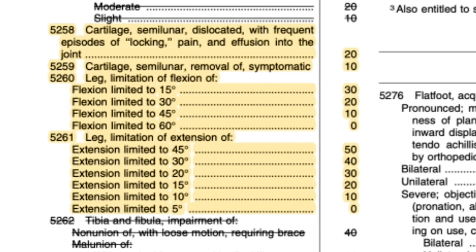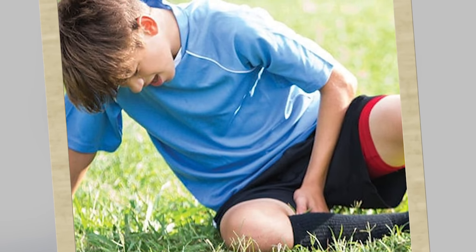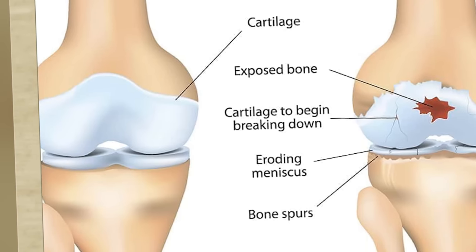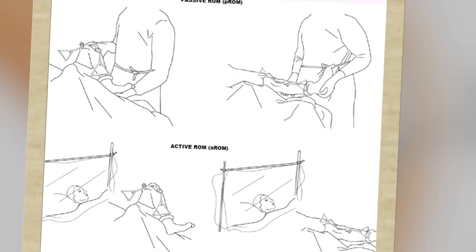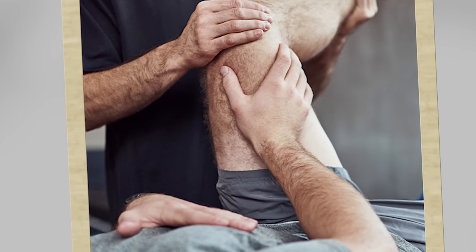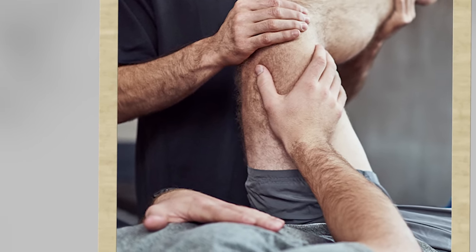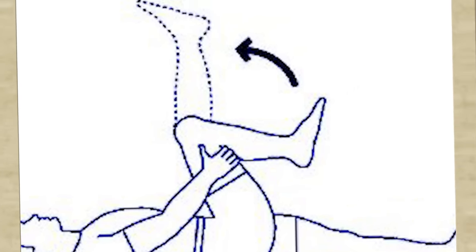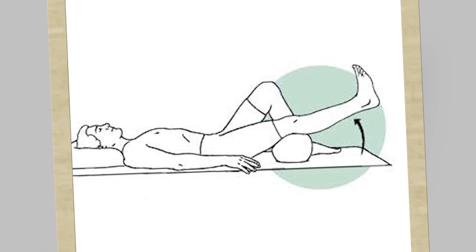You might wonder how you'd ever get a 50% rating for extension, or why you only got 0% or 10% for flexion at your C&P exam. This really comes down to a big difference between active and passive range of motion. Active range of motion is measuring your range of motion under load or resistance. Passive is moving your joint without any resistance — just in a relaxed state. As you can imagine, there's a big difference between those two things.